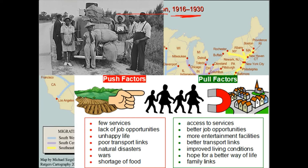Before the next topic, let's remember push-pull factors in immigration or migration. Push factors are things that push you out of a place; pull factors are what pull you into a new location. Push factors from the South included few services, lack of job opportunities — there weren't many cities or factories, just farms — and sharecropping, which was almost a new form of slavery where you couldn't really make money.